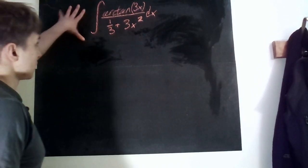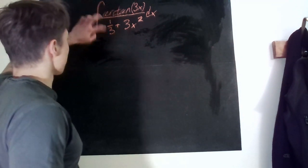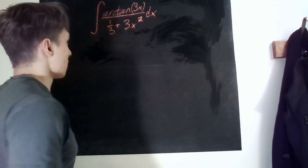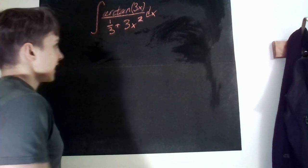So here we have the integral arctan 3x over one third plus 3x squared, that is a 2x squared.